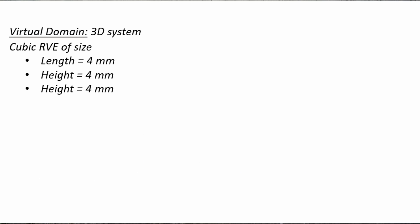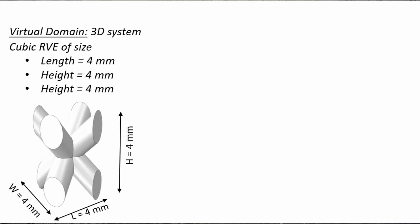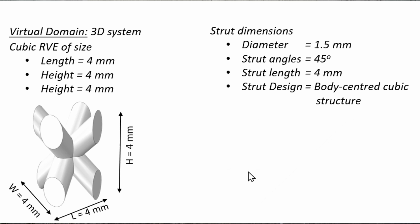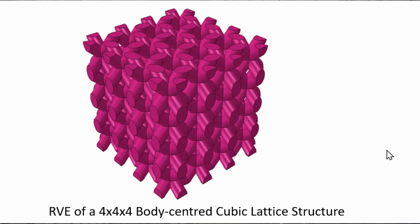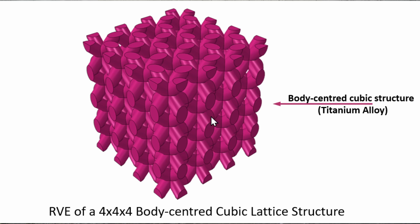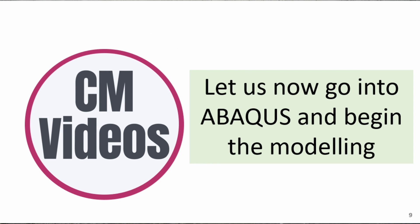The virtual domain we're going to deal with will look like this for the unit cell. The unit cell will have a length of 4x4x4 and the strut dimensions would have dimensions that look like this. We're going to make these struts slightly bigger in length so that at the end we trim them off to get into the right shape. This will be the structure of the strut. At the end, we'll create a 4x4x4 body-centered cubic lattice cell structure. It's going to be made from titanium, but at the moment we're only interested in creating the geometry. So let's now go into Abacus and begin this modeling.